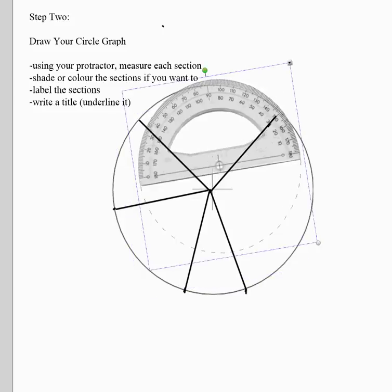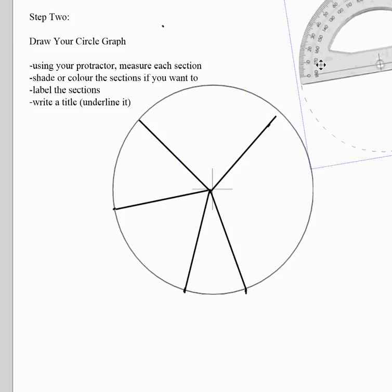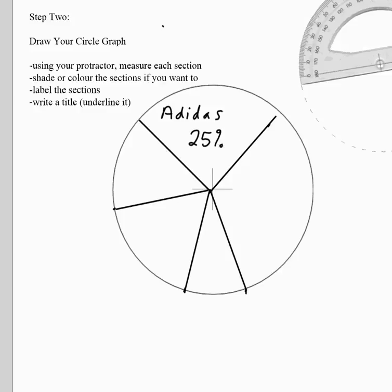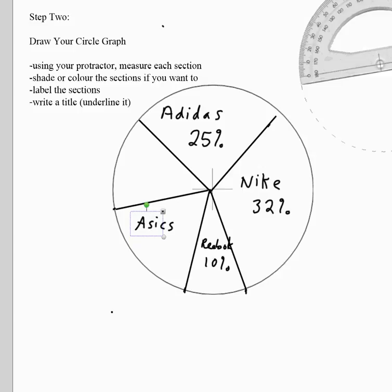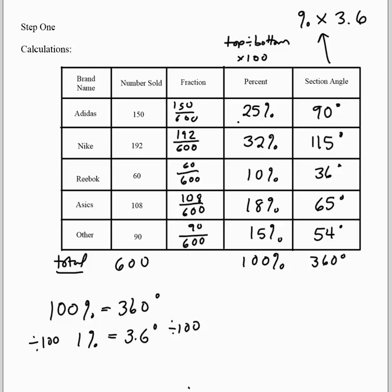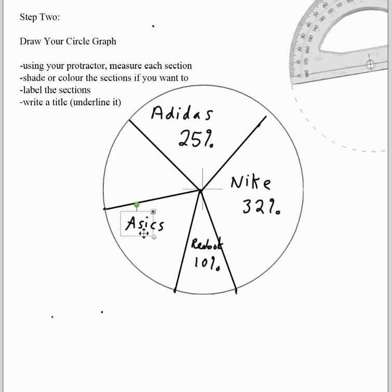Move the protractor out of the way and you have your circle graph — but you need to label it. The first section is Adidas. We don't label with degrees because 90 degrees is meaningless to the reader; instead we label with the percent. Adidas is 25 percent, Nike is 32 percent, Reebok is 10 percent, A6 is 18 percent, and Other is 15 percent.